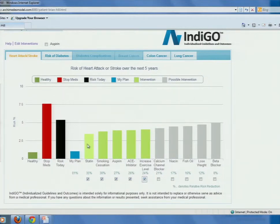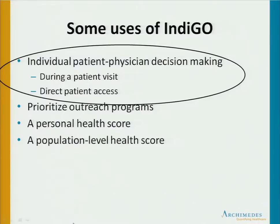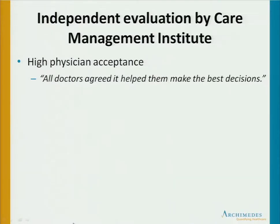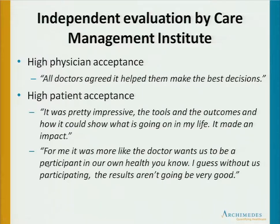The blue bar represents the risk that would occur if the patient took various treatments. The physician and patient can click on these bars and decide which treatments to consider in various combinations, and it changes the patient's current risk. The physician and patient can see this information together — it turns out to be a very powerful motivator for the patient. This has been evaluated independently by the Care Management Institute at Kaiser Permanente, and there was very high physician acceptance. Their quote was: all doctors agreed it helped them make the best decisions.